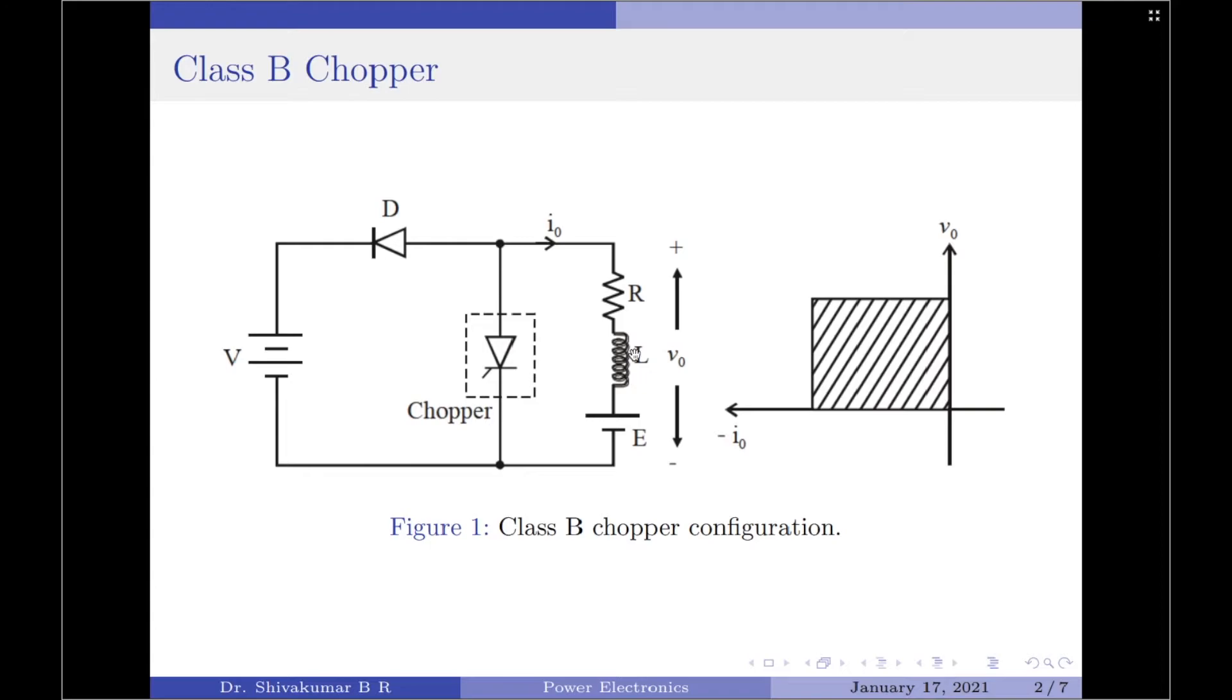The energy stored in the inductor is released in the form of current. Since the load current is again flowing out of the load, we regard this as negative load current once again.